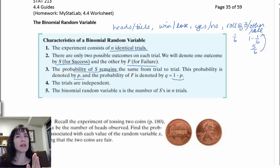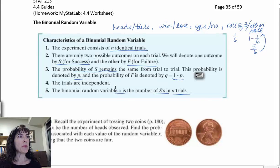And then the last criteria is the binomial random variable x is the number of successes in n trials. And that's what we're looking for. And it's exactly that many successes in n trials. So, let's look at an experiment.